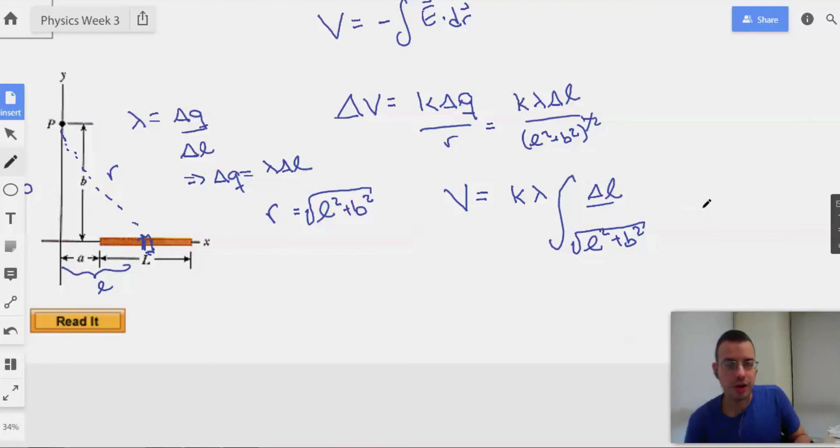Integral. Okay. I don't know if I know how to do that. Oh, so I think this guy is a trigonometric substitution. Specifically tangent. When you add them together, it's tangent.